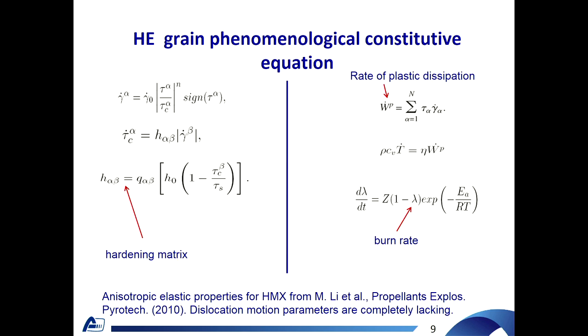But for high explosive such as HMX, octogen based explosive, dislocation motion parameters are completely lacking and anisotropic elastic properties for HMX are different in several times in different articles. So we have to use a phenomenological constitutive model for dislocation motion shear rate to receive at least qualitative results. We account for plastic dissipation and heating due to it. And we use the Arrhenius law for burn rate calculation.